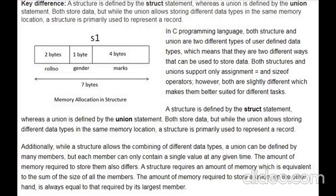The difference between a structure and union in C language: a structure is a group of elements of different data types, and a union is also a group of elements of different data types. We use the keyword 'struct' for structures and 'union' for unions. For example, a structure may have members like roll number (integer, 2 bytes), gender (character, 1 byte), and marks (float, 4 bytes), giving a total memory allocation of 7 bytes.